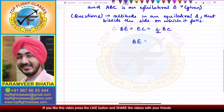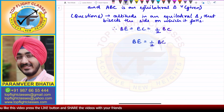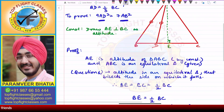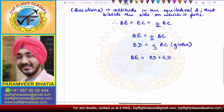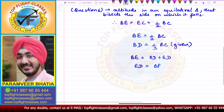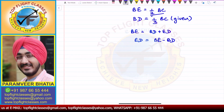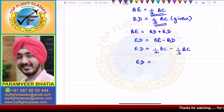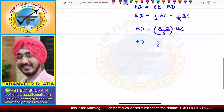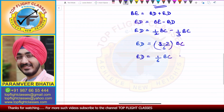So we have BE equal to half of BC — this is equation 1. And BD equals one third of BC — this is equation 2, which is given. Looking at the figure, BD plus DE equals BE. Therefore, ED equals BE minus BD, which is BC/2 minus BC/3. Taking LCM 6, ED equals (3 minus 2)/6 of BC, so ED equals BC/6.